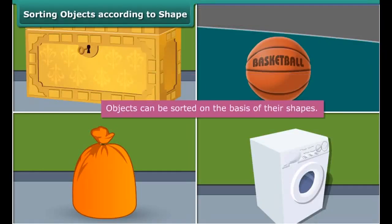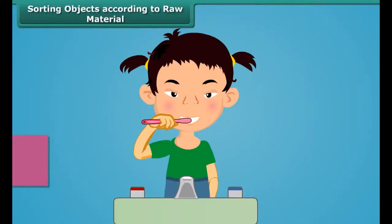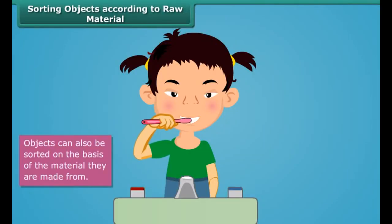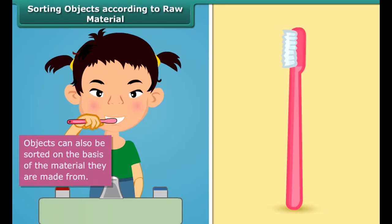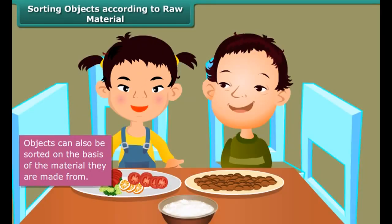A box is a cube or a cuboid, whereas a ball is a sphere. A laundry bag is cylindrical in shape whereas a washing machine is cuboidal. Thus we can classify objects on the basis of their shapes. Circular or spherical objects form one group, while cubical, cuboidal, square, and rectangular objects form another group. Such a classification allows us to study and analyze the properties of different shapes.